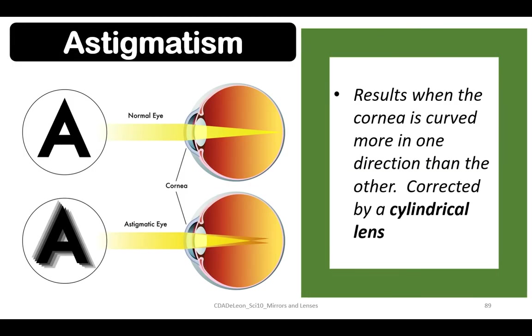Astigmatism is a result of when the cornea is curved more in one direction than the other. It is corrected by a cylindrical lens.